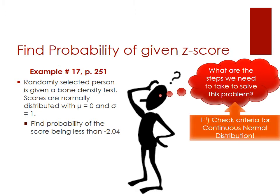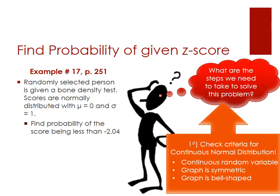The first thing we need to do is check our criteria for a continuous normal distribution. The criteria are: one, that it's a continuous random variable — this is true because bone density tests are measurements, so they are continuous random variables. Two, the graph is symmetric — this will be true because with a standard deviation of 1, it will be reflected as negative 1 and positive 1 on either side of the mean, making the graph symmetrical and bell-shaped.